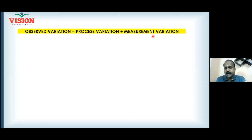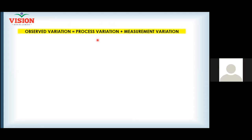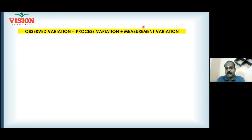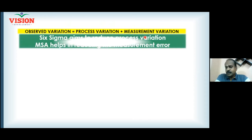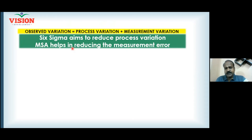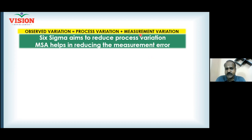Reducing process variation is the goal of a Six Sigma project, but you can only do that job properly when your measurement variation is under control. Measurement System Analysis helps reduce measurement error so that you can have a better focus on reducing the process variation.